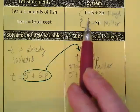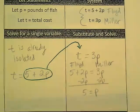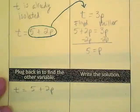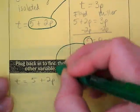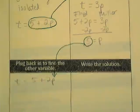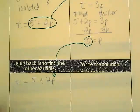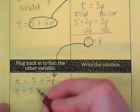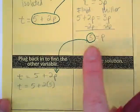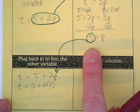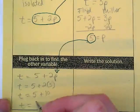We now have this. We have to go back to the first equation and we're going to plug it back in to find the other variable. So the total is equal to 5 plus 2p. I'm going to take this 5 and I'm going to bring it down here and I'm going to plug it in for the pounds. So I'm going to rewrite this as t is equal to 5 plus 2 times 5. T is equal to 5 plus 10. The total is equal to 15.